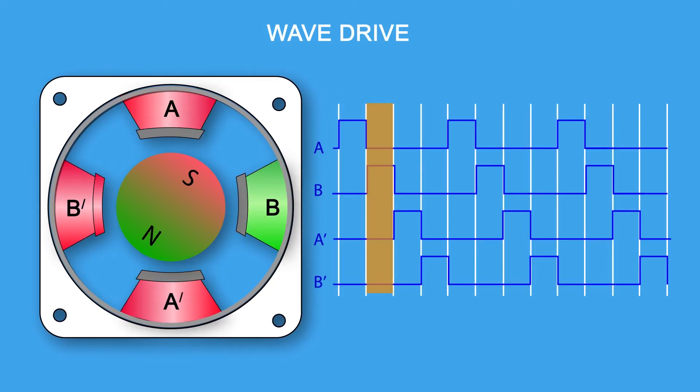The wave drive method has been simplified to better illustrate the theory. In the illustration, each 90 degree turn is representing 1.8 degrees of rotor rotation in an actual motor. In the wave drive method, also called the one phase on method, only one phase is turned on at a time.